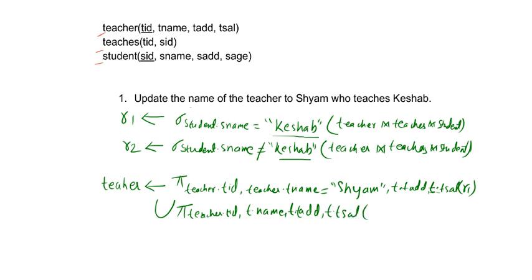The second part of the union uses the same projection of teacher attributes but from R2, keeping the original name unchanged. The union of both parts gives the final query. This will update the name of the teacher to Sam who teaches K sub. I hope you got it, thank you.